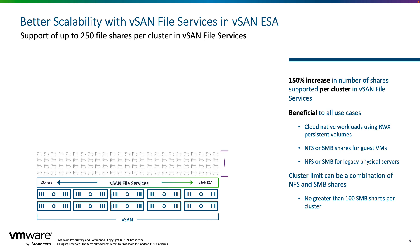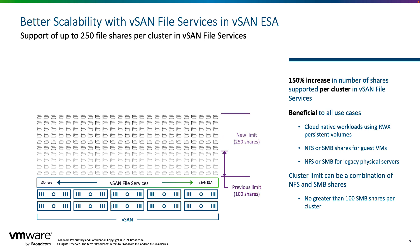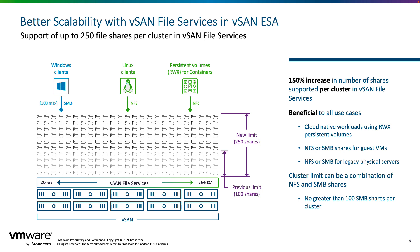Next up are improvements in scalability. With vSAN file services, where previously we had a limit of 100 shares per cluster, we've driven this up to 250 shares per cluster. This enhancement is specifically targeted at customers using NFS exports for different use cases. A major use case is read-write persistent volumes commonly used for Kubernetes and DevOps workflows. File services have been available since vSAN 7, covering use cases ranging from home shares to Linux clients, and we're looking to improve the scalability and capabilities further.